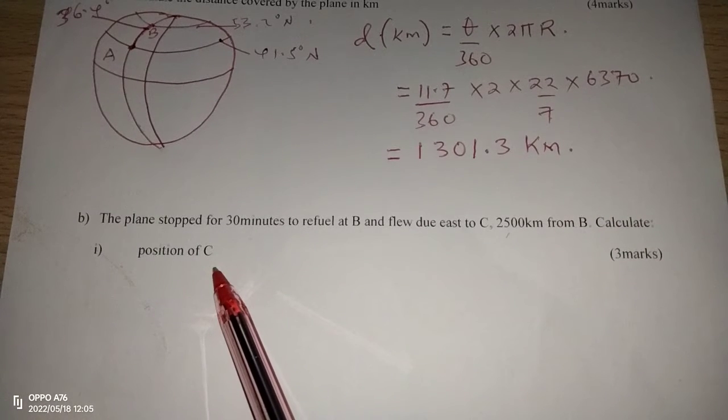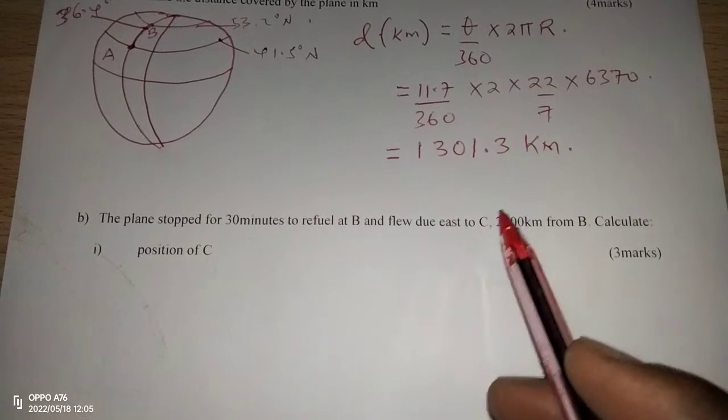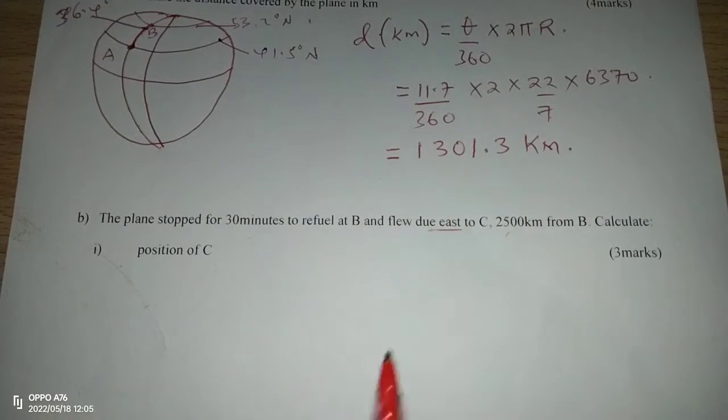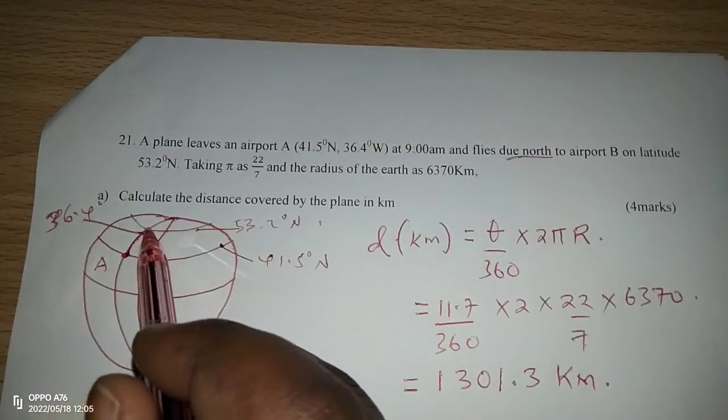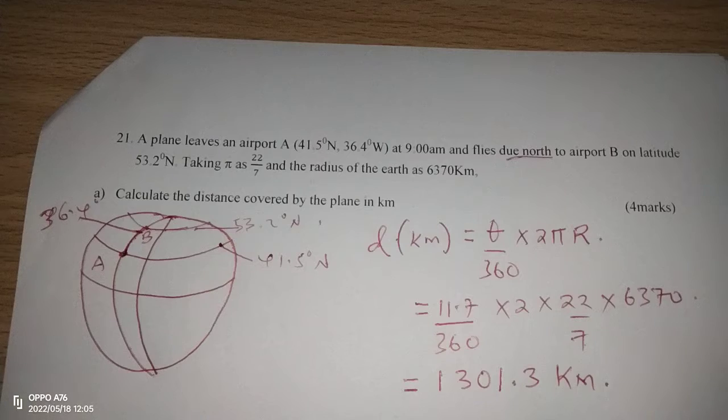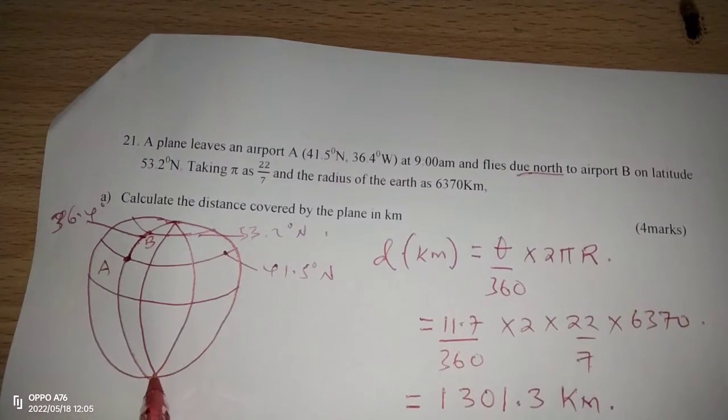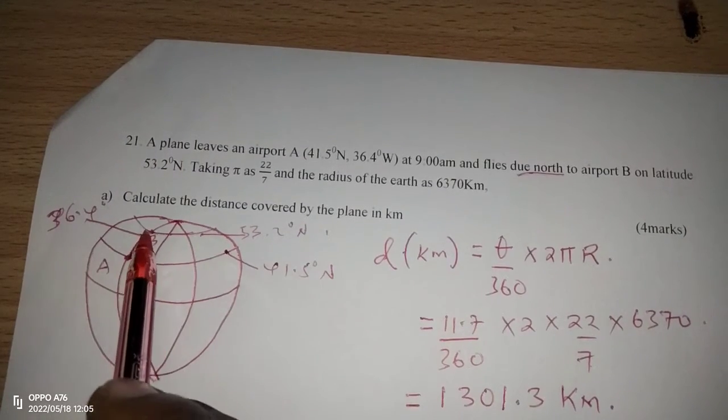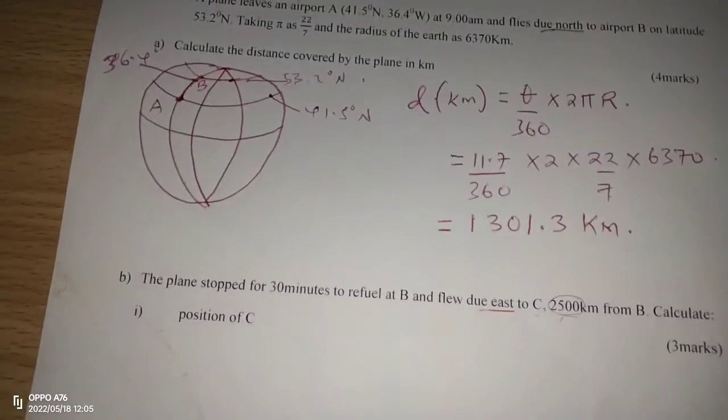Therefore, now we have another airport C, which is 2500 kilometers to the east of B. From B going to the east until we cover 2500 kilometers, then we are going to arrive at C. C is somewhere on an unknown longitude, but we are sure the distance from B to C is 2500.